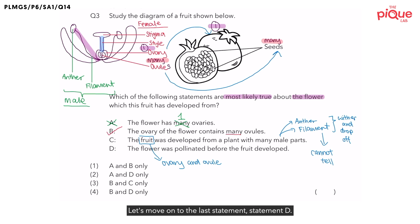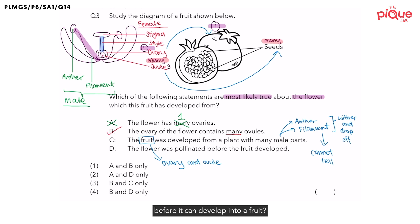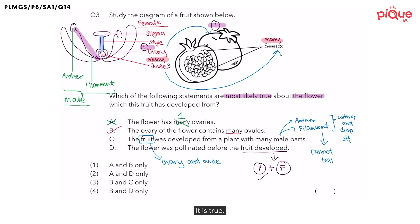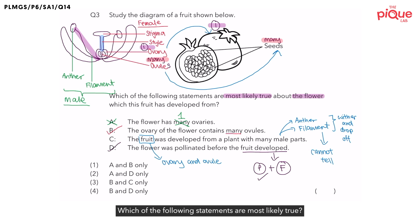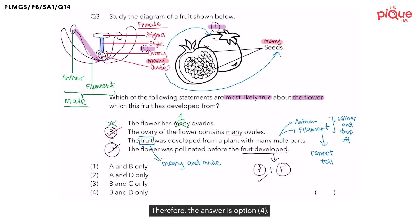Let's move on to the last statement, Statement D: The flower was pollinated before the fruit developed. Do you remember the two important processes the flower has to undergo before it can develop into a fruit? It must undergo pollination, and after pollination, fertilization. So is it true that the flower was pollinated before the fruit developed? It is true. Therefore, we give Statement D a tick. Which statements have we ticked? B and D. Therefore, the answer is option 4.